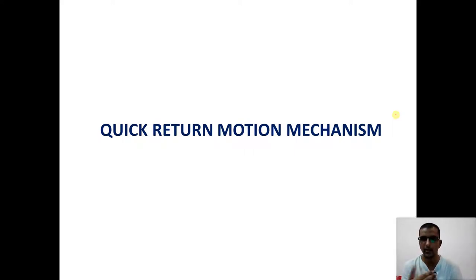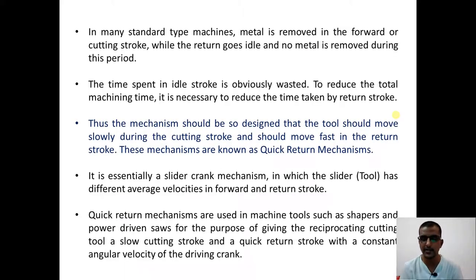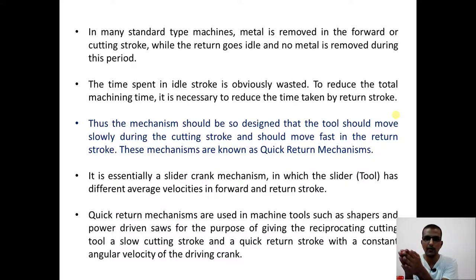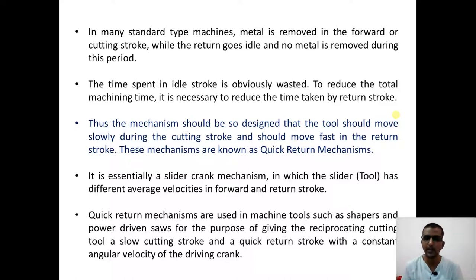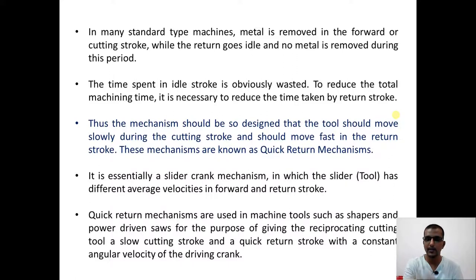One type of motion we want to generate using a mechanism is quick return motion. In any metal cutting operation, the metal is cut only in the forward stroke — when moving from left to right, the material is cut and more time is taken. When it returns to the initial position, the material is not cut. To increase production rate, the cutting stroke should take more time, but the return should happen as quickly as possible. A mechanism that generates this is called a quick return mechanism.